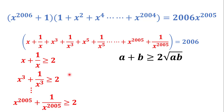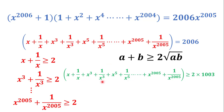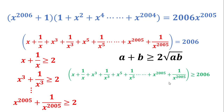Adding all these inequalities, the left-hand side is (x + 1/x) + (x^3 + 1/x^3) + ... + (x^2005 + 1/x^2005), which must be greater than or equal to 1003 times 2, because there are 2006 ÷ 2 = 1003 such pairs. So 1003 × 2 = 2006 on the right-hand side.